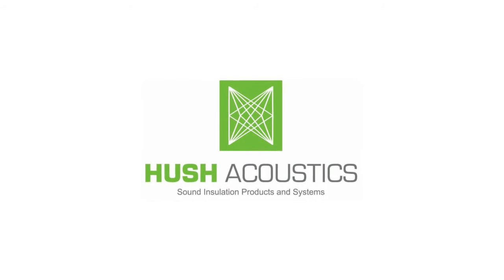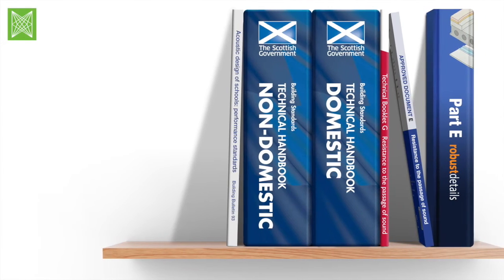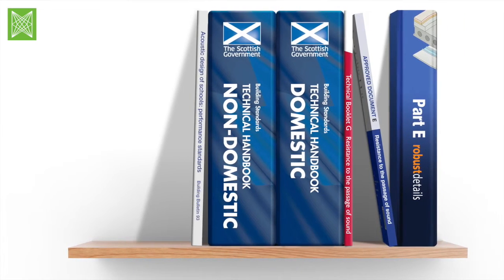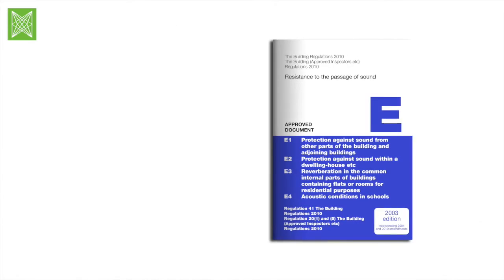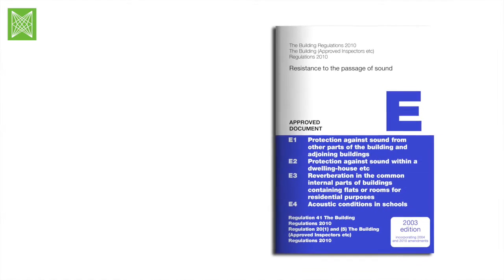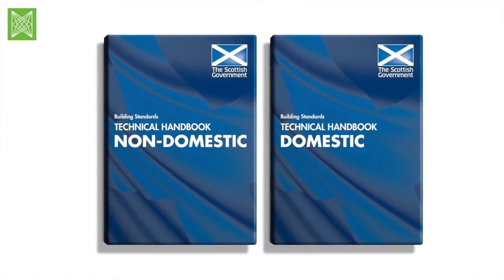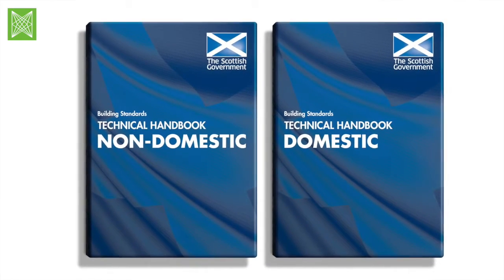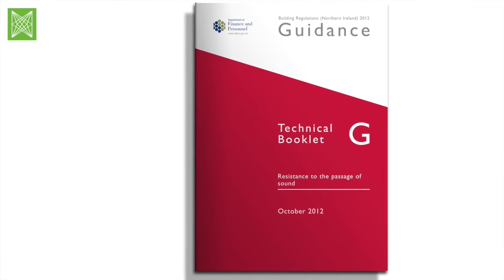Hush provide acoustic products and systems for all types of buildings and comply with all UK building regulations: Approved Document E for England and Wales, Section 5 Noise of the Scottish Building Standards, and Part G for Northern Ireland.